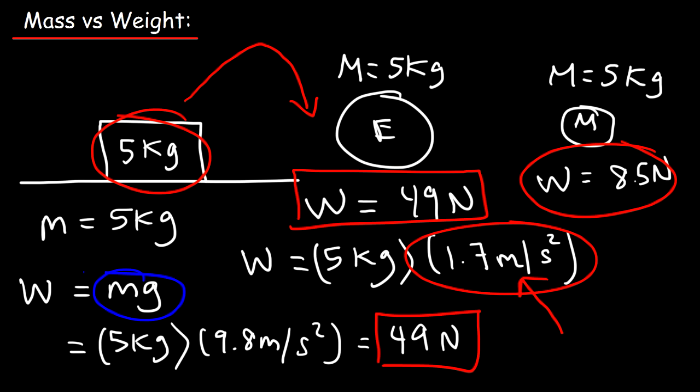Mars, for example, is much less than Earth. I think the gravitational acceleration on Mars is about 3.7. So on Mars, you would feel a lot lighter than you would on Earth. And on the Moon, you would feel like a feather.